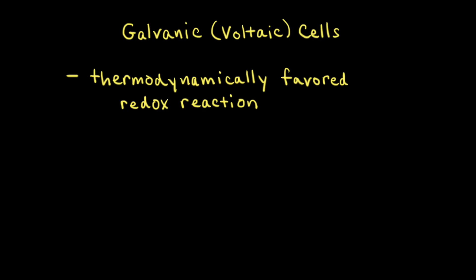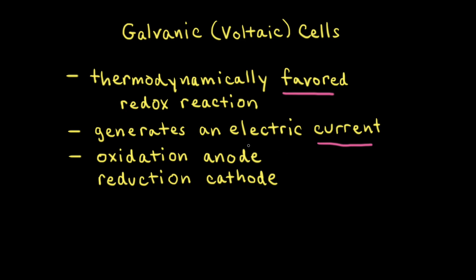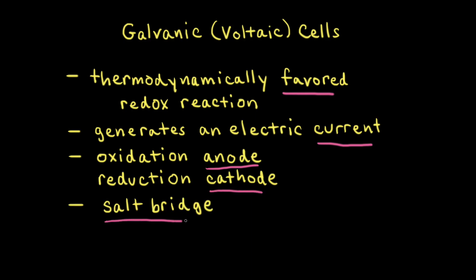In summary, galvanic or voltaic cells use a thermodynamically favored redox reaction to generate an electric current flowing in the wire between the two electrodes. The electrode where oxidation takes place is the anode, and the electrode where reduction takes place is the cathode. A salt bridge balances the charges in the two compartments. Eventually the reaction reaches equilibrium, the voltage equals zero, there's no more current, and the galvanic or voltaic cell stops working.